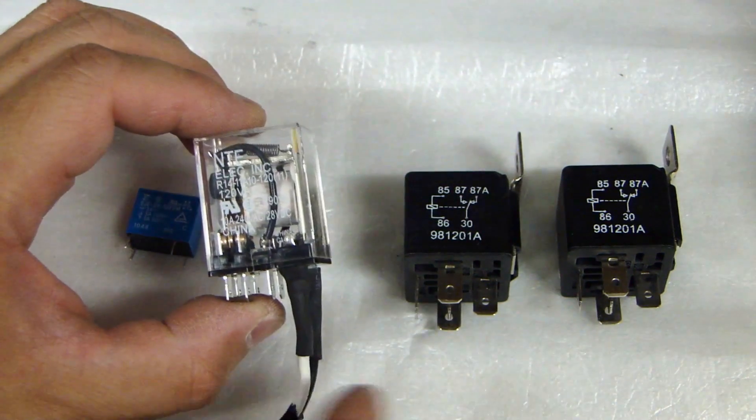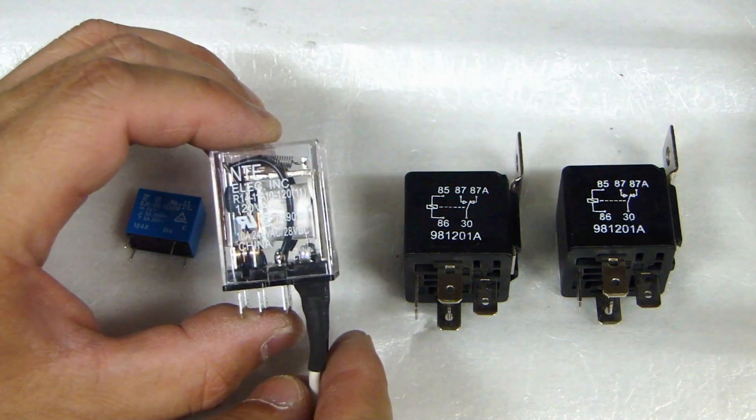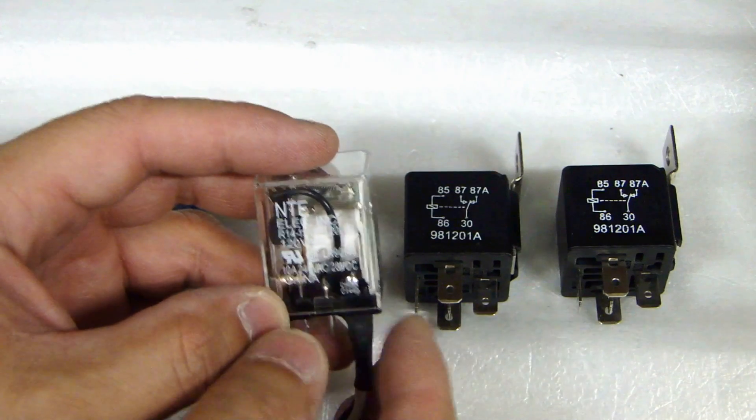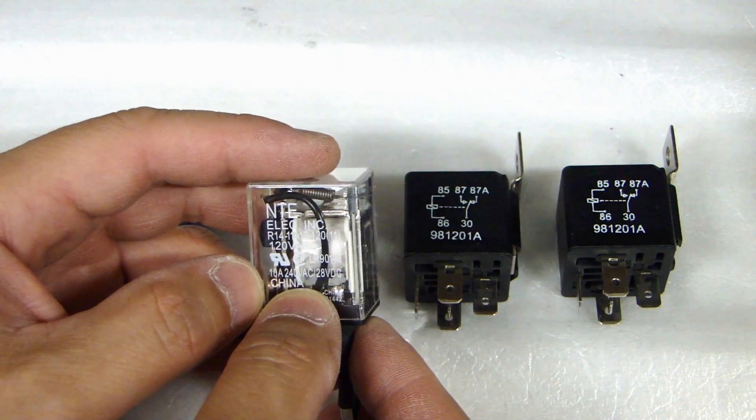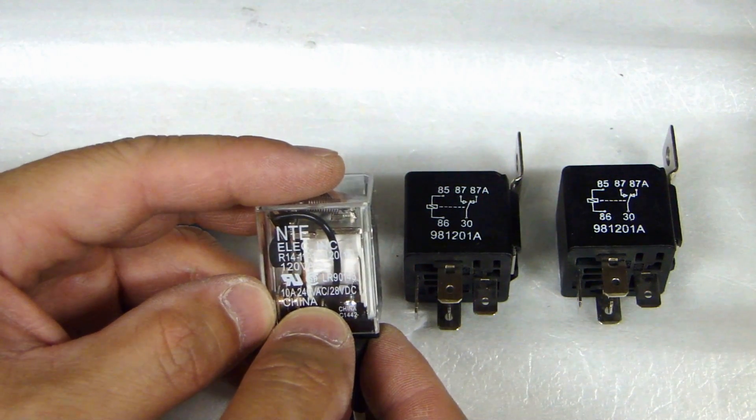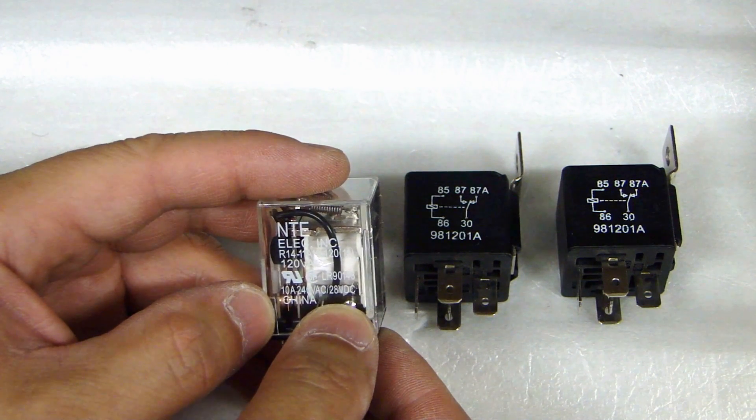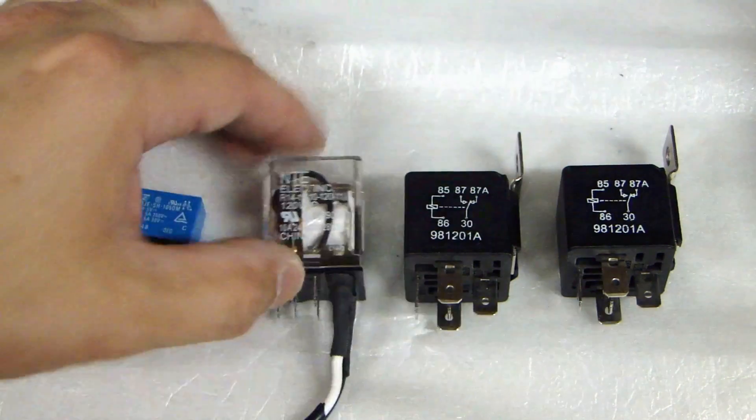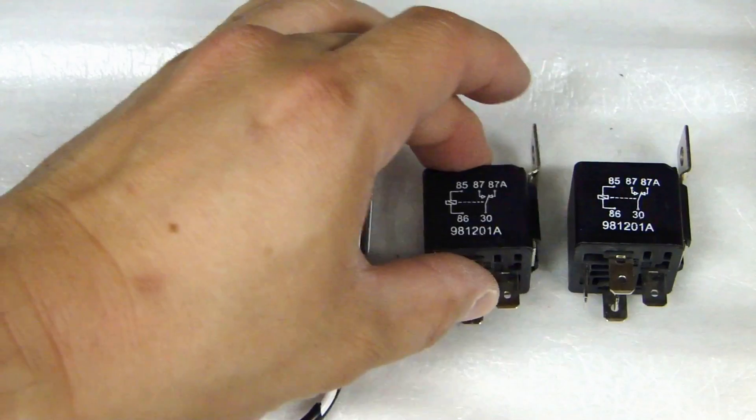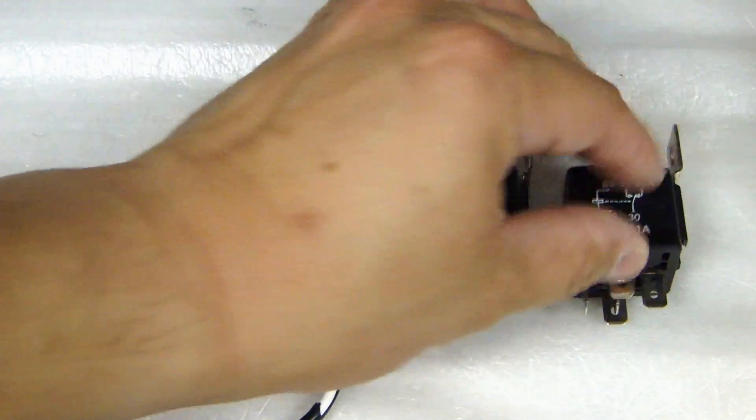Here this is the 120 volt AC relay and it's printed at the bottom here tells you that it can handle 10 amp, 240 volt AC and 28 volt DC. These automotive ones are typically rated at 30 amp or 40 amp.